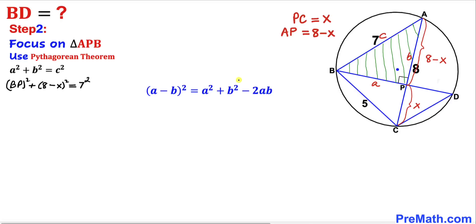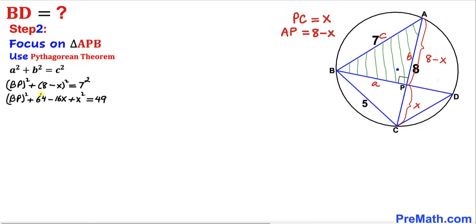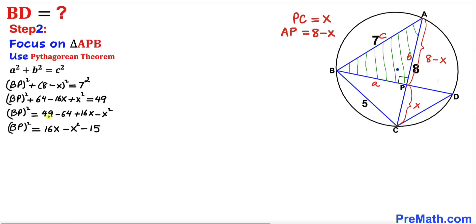Now let's recall the identity (A − B)² = A² − 2AB + B². Applying it on the left-hand side, BP² + 64 − 16X + X² = 49. Moving everything to the right-hand side to isolate BP², we get BP² = 49 − 64 + 16X − X², which simplifies. Let's call this equation number 1.